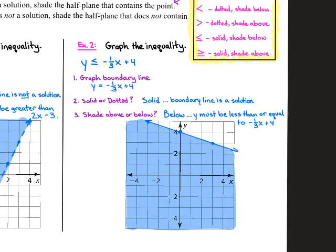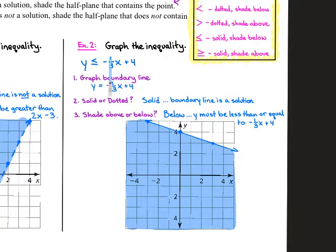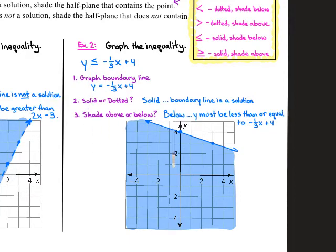Our inequality was y ≤ -⅓x + 4. We graph the boundary line: y-intercept is at 4, and the slope tells us to go down 1 and right 3 because it's a negative slope, so it goes downhill. There's our boundary line. Solid or dotted? Using the cheat sheet: less than or equal to means a solid line and shade below. Solid line, shade below — we're done. Easy.